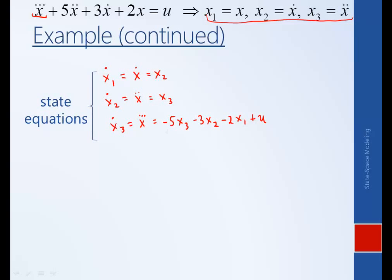We define these three equations as our state equations. State-space form also includes an output equation or a series of output equations. What defines the output is an engineering decision — it depends what we're trying to control or analyze. Position could be the output, velocity could be the output, or both. So let's say arbitrarily that in this case x dot is the output. That just means that our output is x2, because x dot is equal to x2. This is something you'll have to be told or decide based on what it is you're trying to accomplish.